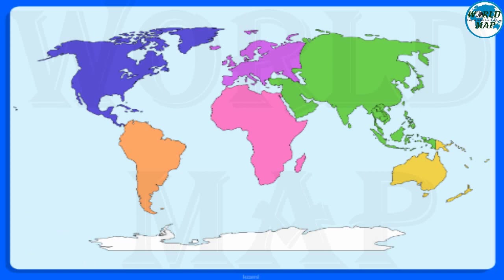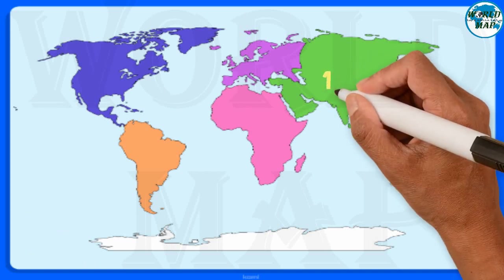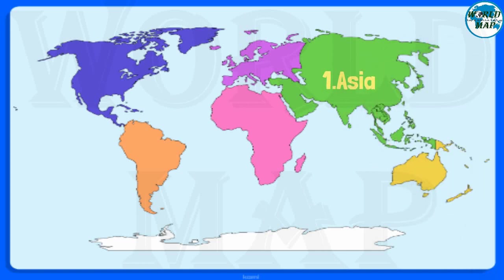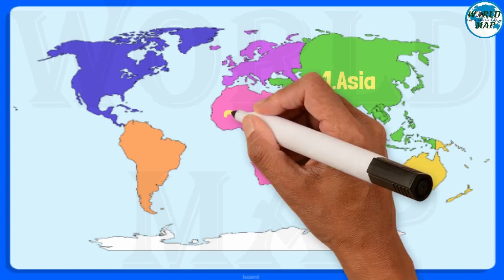Number 1. Asia. It is the largest continent in the world both in terms of area and population. It comprises 48 nations and 60% of the world's population.